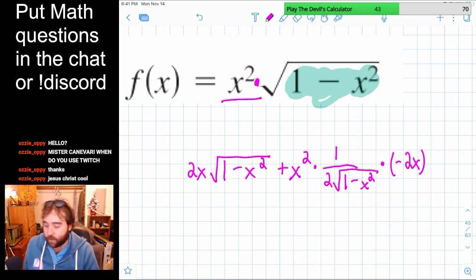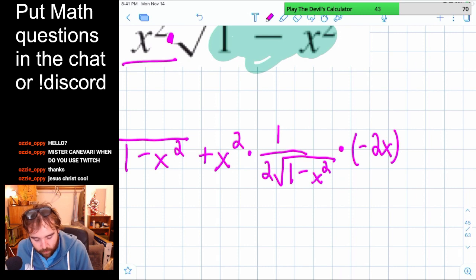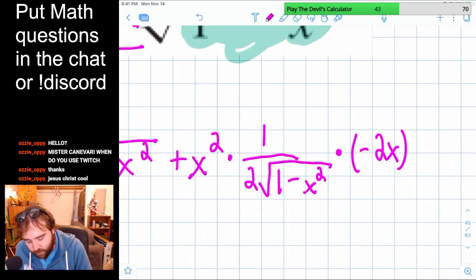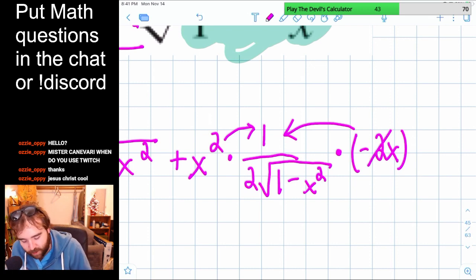You shouldn't leave it like that, though. You should try to simplify it as much as you can. So what can you do here? Remember that when you're multiplying by stuff, they're really just on top of the fraction. So this x squared and this negative 2x are really just multiplied together on top of the fraction. So we could cancel out these 2s.